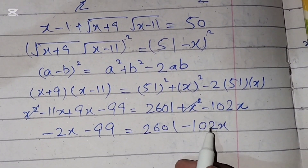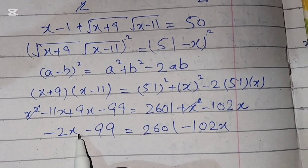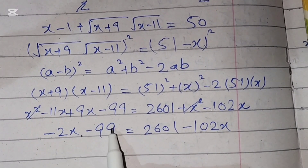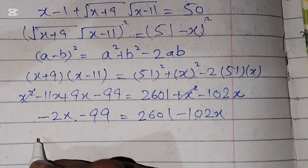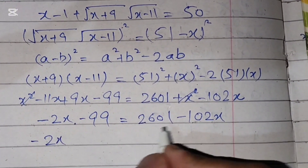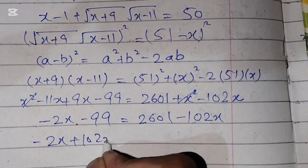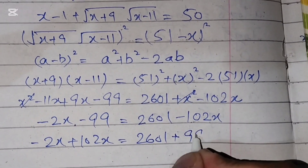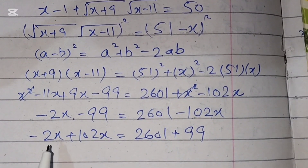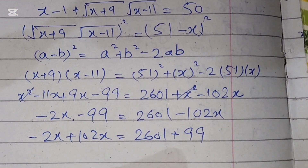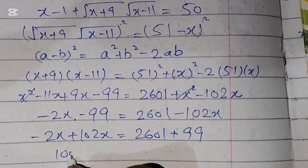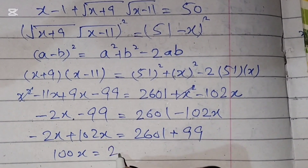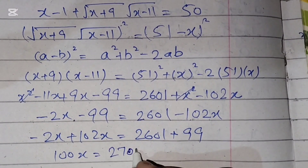We take -102x to the left side and -99 to the right side: -2x + 102x = 2601 + 99. That gives 100x = 2700, so x = 27.